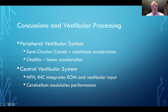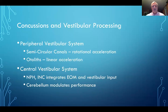In regards to concussions and vestibular processing, there are two main systems to pay attention to. The peripheral vestibular system includes the vestibular apparatus — semicircular canals, which are for rotational input, and otoliths, which are about linear acceleration, forward and backward. The otolith is also involved in things like skew deviation, where the patient may not have symptoms in a prone versus supine position.